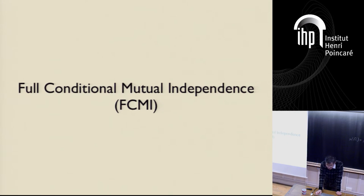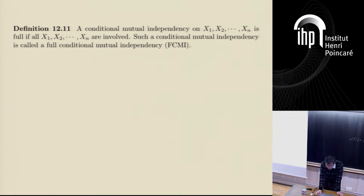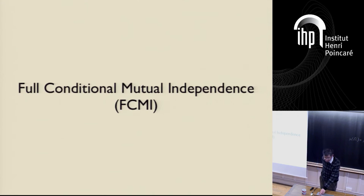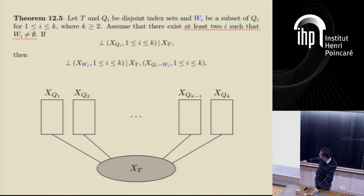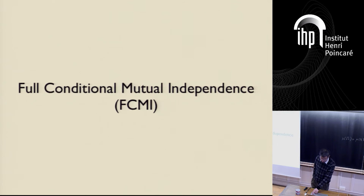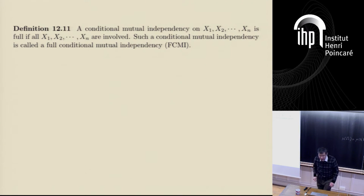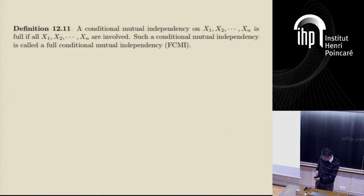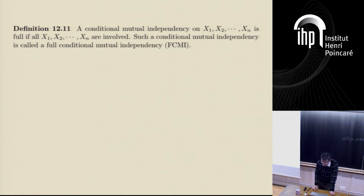Now I'm going to talk about something called full conditional mutual independence. It's important to fix n. A conditional mutual independence on X1 up to Xn is full if all the random variables are involved. We call this an FCMI — full conditional mutual independence.